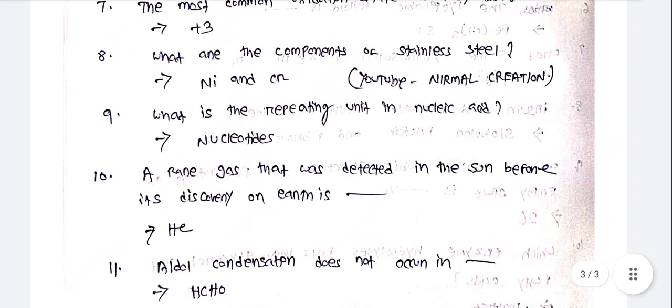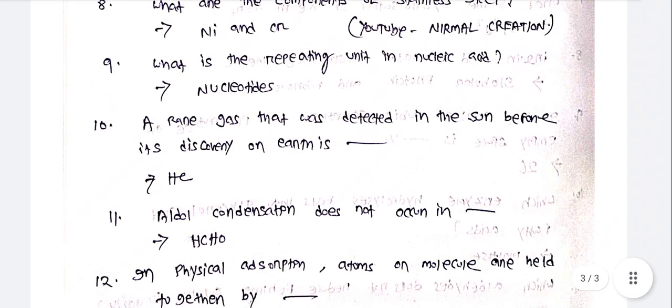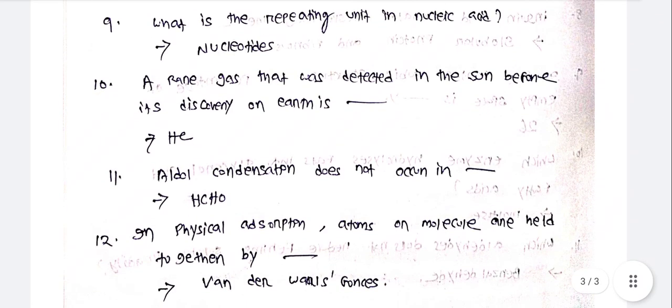What are the components of stainless steel? Answer: Nickel (Ni) and Chromium (Cr). What is the repeating unit in nucleic acid? Answer: Nucleotides.